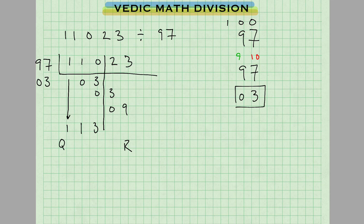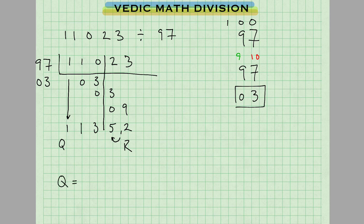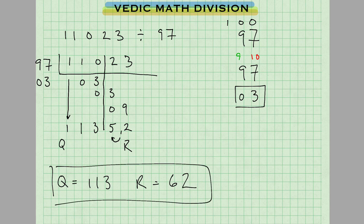All that's left to do is add these columns up. You step over to the right one column each time, and when you reach the last column, you're done. So adding vertically: 2 and 3 give us 5. 3 and 9 give us 12 — we write 12, carrying the 1. So our quotient equals 113 and our remainder equals 62. Here is our answer for the first problem: 113 remainder 62.